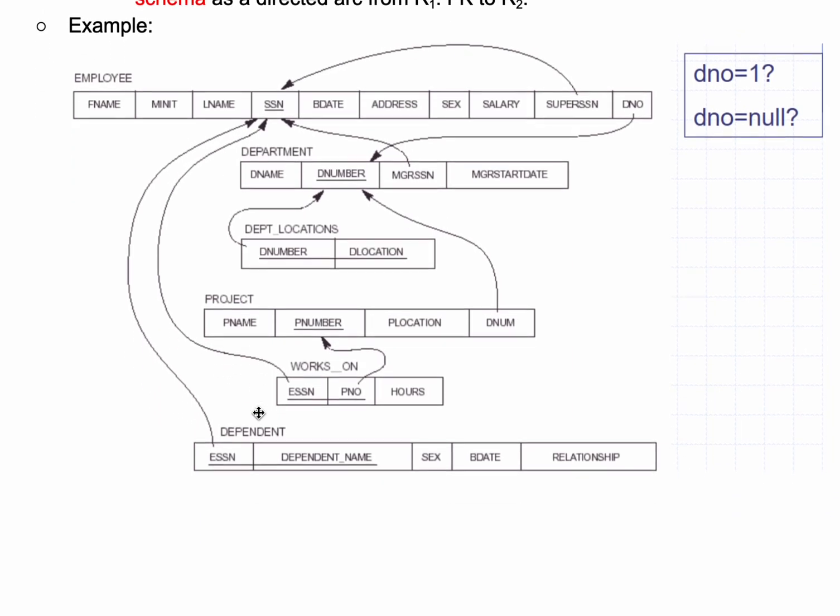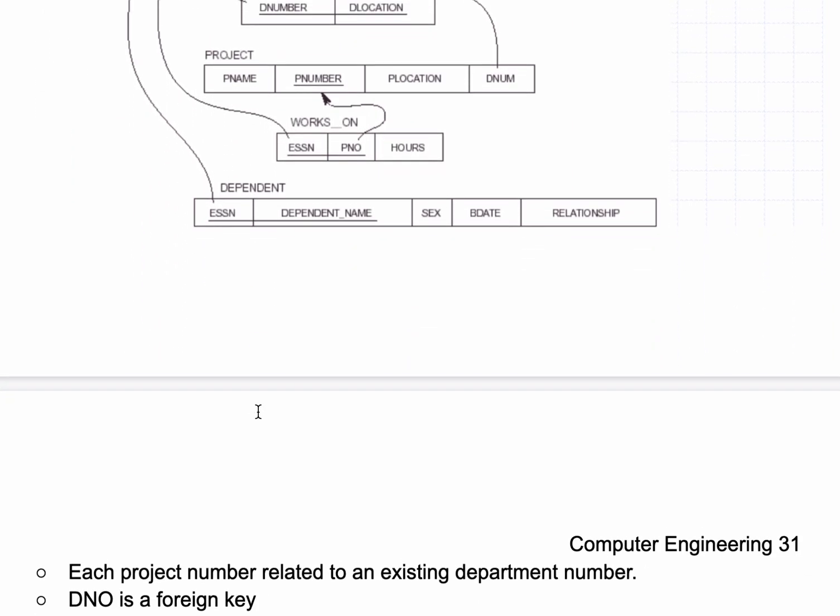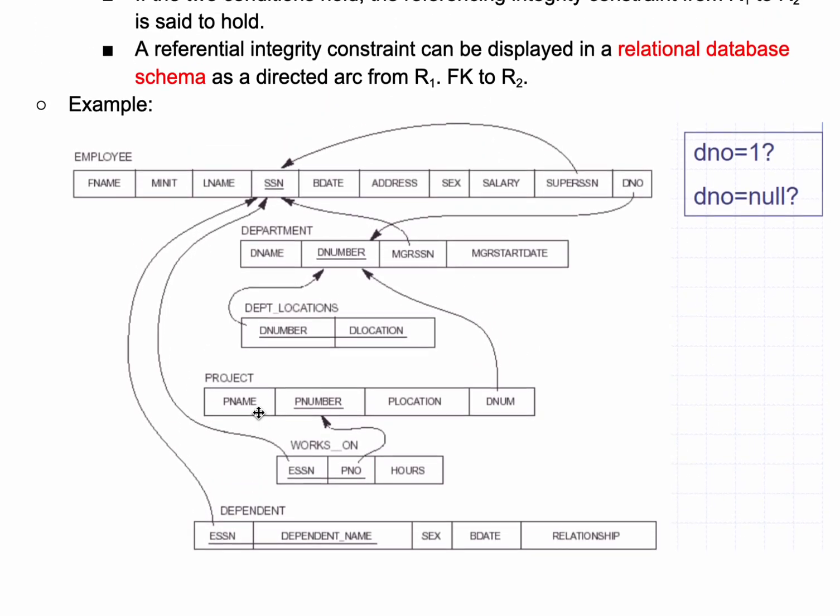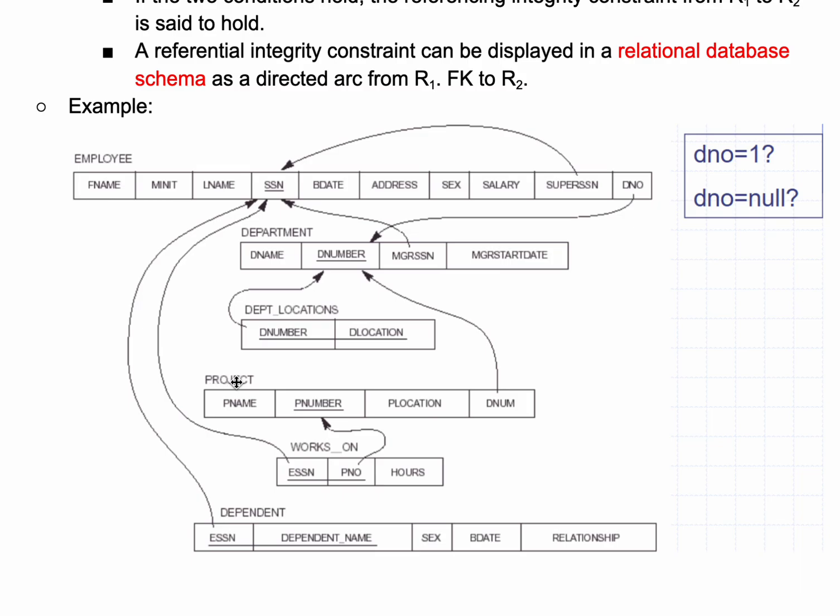In this example, each product number relates to an existing department number. We can see that we have our project right here, and then we have our department number that it relates to, the DNUM.